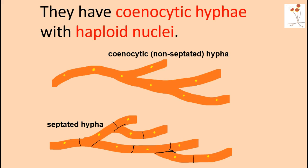All members of the Zygomycota have coenocytic hyphae with haploid nuclei. I'm showing you two pictures — one of coenocytic hyphae on the top and on the bottom a septated hyphae. Being coenocytic means they do not have septa that separate their individual cells, so they'll have long strands of hyphae with organelles and nuclei floating from one branch to the other. Their nuclei are haploid, meaning they only have one copy of every chromosome, which differs from our diploid nuclei — we have two copies of every single chromosome.